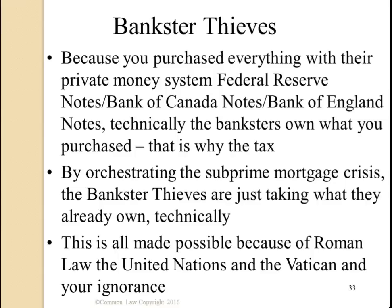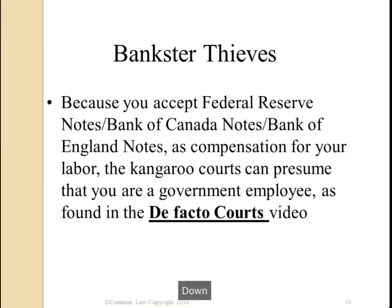By using a negotiable instrument to purchase things, kangaroo courts presume you consent to their martial law rule, as found in the We Are Under Martial Law Rule video and the de facto courts video. Because you purchased everything with their private money system, technically the bankers own what you purchased — or at a minimum, you're using their private money, so they tax you for the use of their money. By orchestrating the subprime mortgage crisis, the bankster thieves are just taking what they already own, technically.